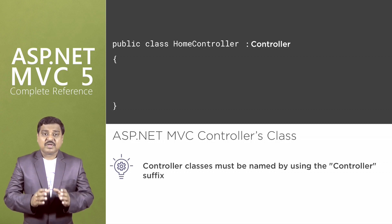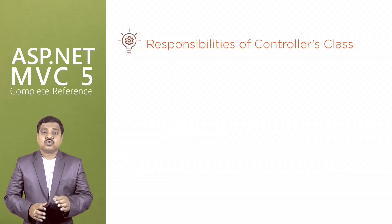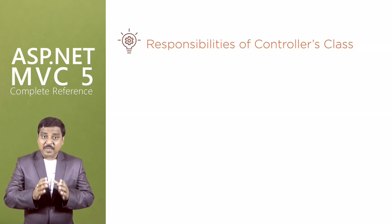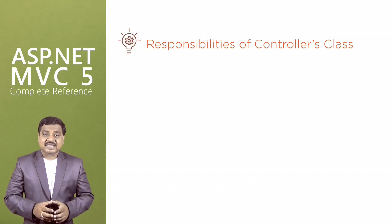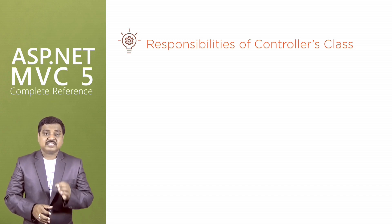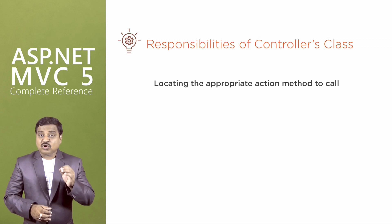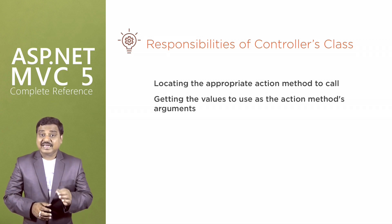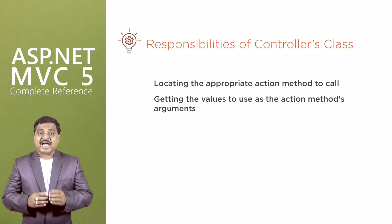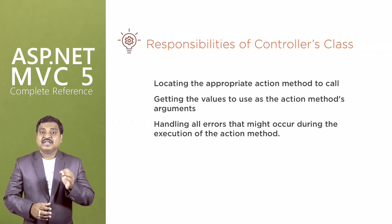We need to remember some important points about the controller — specifically, what are the responsibilities of the controller class? The controller class is the first main responsible person in ASP.NET MVC development. It is responsible for accepting the request from the user and locating the appropriate action method to be called. It is responsible for getting the values to use as the action method's arguments, and for handling all errors that might occur during the execution of the action method.